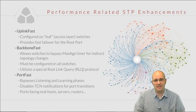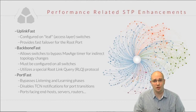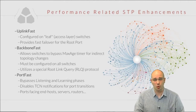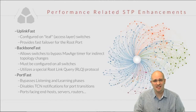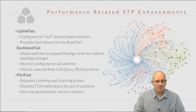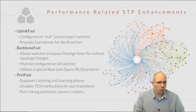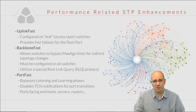Port fast is a feature designed to be configured on ports facing end hosts like computers, servers, or routers — in cases where we are 100% sure there are not going to be any loops. Port fast allows ports to bypass the initial listening and learning phases when transitioning from the disabled state, meaning that when the port comes out of no shutdown, it will start forwarding traffic immediately. Additionally, port fast disables the generation of TCN BPDUs in case of a topology change on a port with port fast enabled.